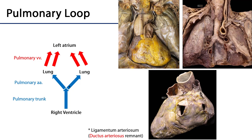Let's take a look at this in a little more detail. The pulmonary loop begins in the right ventricle. 100% of cardiac output is leaving the right ventricle and heading out through the pulmonary trunk to the pulmonary arteries, which then serve capillary beds around the alveoli of the lungs.